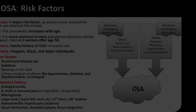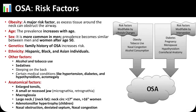OSA is primarily associated with obesity, as excess neck and pharyngeal tissue narrows the airway. Its prevalence increases with age and is more common in men, though rates equalize between men and women after age 50. Genetic predisposition and certain ethnic backgrounds, including Hispanic, Black, and Asian populations, increase susceptibility. Additional contributing factors include alcohol or tobacco use, sedative use, sleeping supine, and comorbid conditions such as hypertension, diabetes, hypothyroidism, and acromegaly.